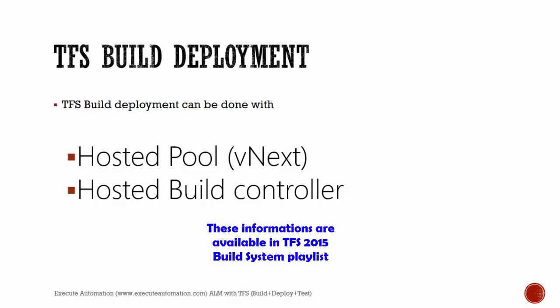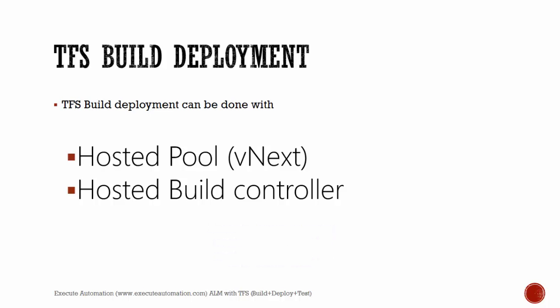Whichever agent is available, the managed pool will automatically take it and run the test. In XAML build, there is an agent and controller model — otherwise called the hosted build controller — where you must have a definite agent and controller set up. This means if you want to run three builds simultaneously, you need three build agents and one controller.